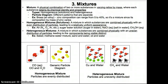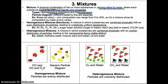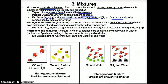Mixtures are physical combinations of two or more substances in varying ratios by mass, where each substance retains its chemical identity and properties. This makes sense since the composition doesn't change if the substance is combined physically. The two types of mixtures are heterogeneous mixtures and homogeneous mixtures. Particle diagrams of mixtures typically have different patterns that are somehow visibly separate. An example of a mixture is brass, an alloy, which is a homogeneous mixture of metals. In brass, zinc composition varies from 5 to 40%, which makes it a mixture since its composition by mass of zinc varies.